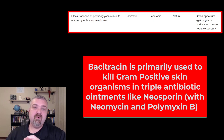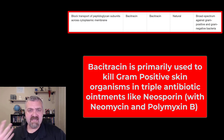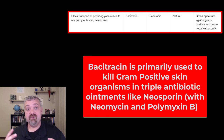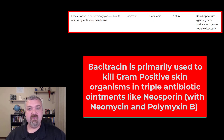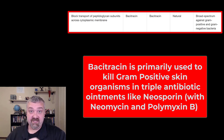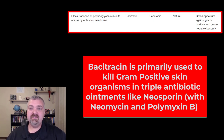You technically could use it orally or intramuscularly, and occasionally it is, but it is nephrotoxic — meaning it can damage the kidneys. So it's primarily used with polymyxin B and neomycin in what you would call the triple-antibiotic, most commonly known by the brand name Neosporin. Neomycin, polymyxin B, and bacitracin are the three antibiotics in your triple-antibiotic ointment or Neosporin, and it's primarily used topically in that way.